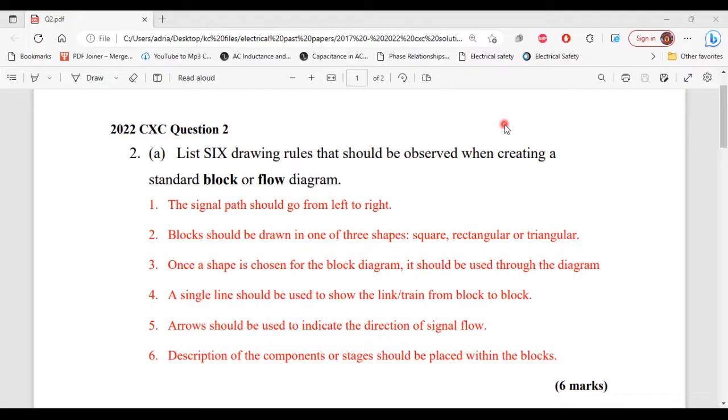Part A. It says, list six drawing rules that should be observed when creating a standard block or flow diagram. One, the signal path should go from left to right.